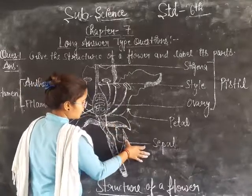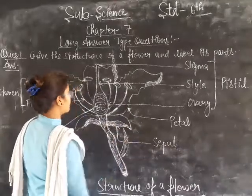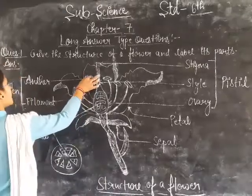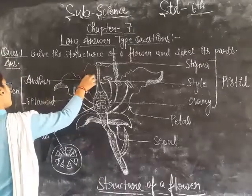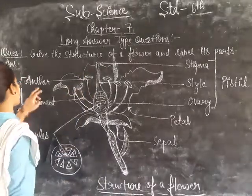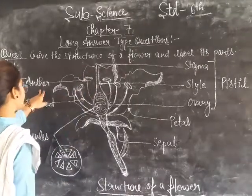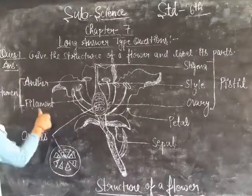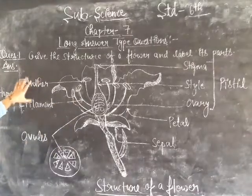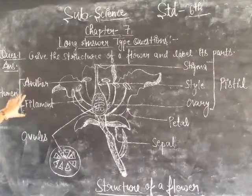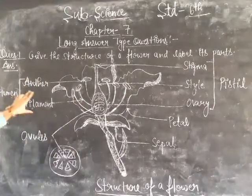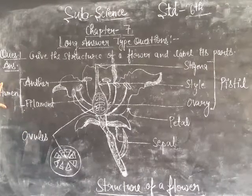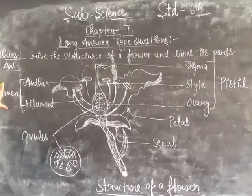Now here, the dark small long-like structure is the anther and the tube-like structure is the filament. These are commonly known as the stamen — anther and filament together are called the stamen.